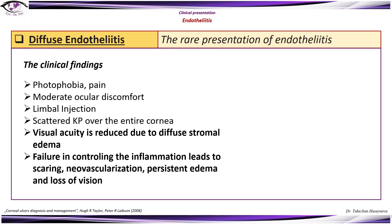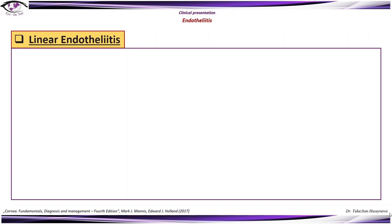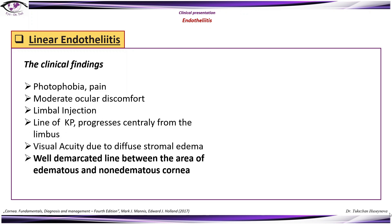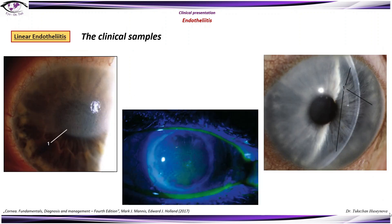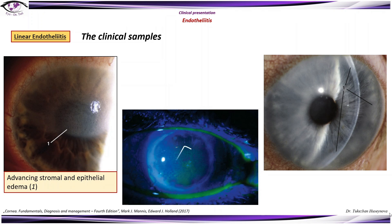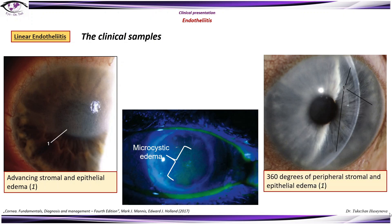Diffuse endothelitis is a rare presentation. Clinical findings include common symptoms listed previously, with visual acuity reduced due to diffuse stromal edema. Failure to control inflammation can lead to scarring, neovascularization, persistent edema, and loss of vision. Linear endothelitis is characterized by a well-demarcated line between edematous and non-edematous cornea, with keratic precipitates at the leading edge of the edema. Clinical samples show advancing stromal and epithelial edema, microcystic edema, and 360 degrees of peripheral stromal and epithelial edema.